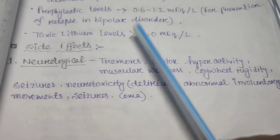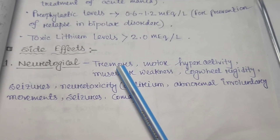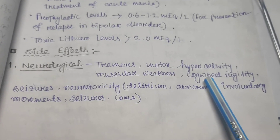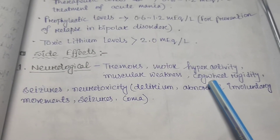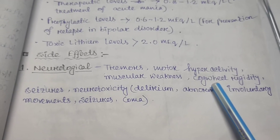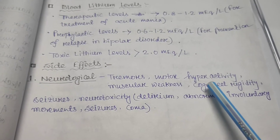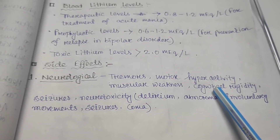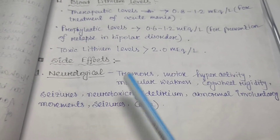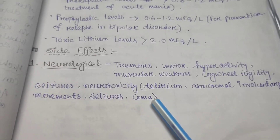Next, the side effects of lithium. Neurological side effects include tremor (involuntary shaking of the hands and other parts of the body), motor hyperactivity, muscular weakness, cogwheel rigidity (a Parkinson's-like rigid movement seen on range-of-motion examination), seizures, neurotoxicity, delirium, abnormal involuntary movements, and coma.